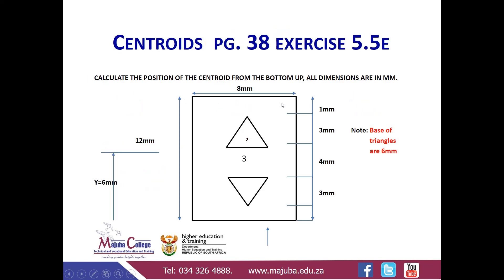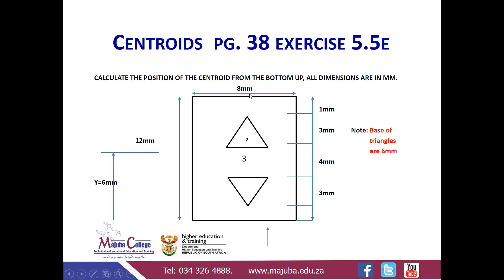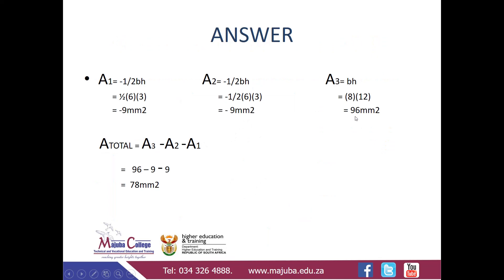For area number three, remember it is the big rectangle — 8 millimeters by 12 millimeters — so it is base times height: 8 times 12, which gives us 96 millimeters squared. Then we find the total area: area 1 plus area 2 plus area 3. Because we have two negative values, it is easy to say 96 minus 9 minus 9, giving a total area of 78 millimeters squared.